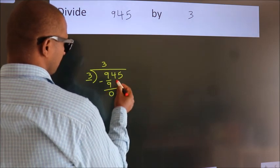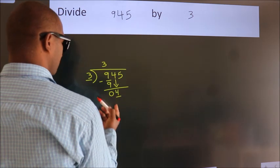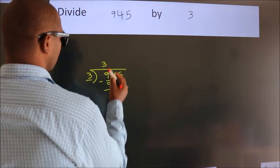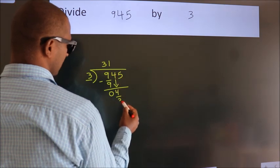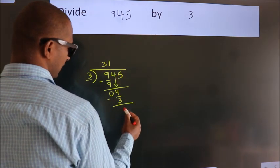After this, bring down the beside number. So 4 down. A number close to 4 in the 3 table is 3 times 1 equals 3. Now we subtract. We get 1.